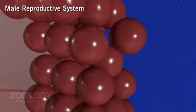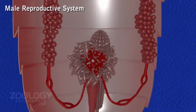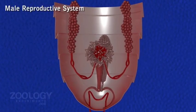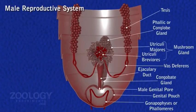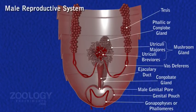Male Reproductive System. Male reproductive organs include testes, vas deferentia, ejaculatory duct, mushroom gland, seminal vesicle, conglobate gland, genital pouch, and external genitalia, all located in the abdomen.